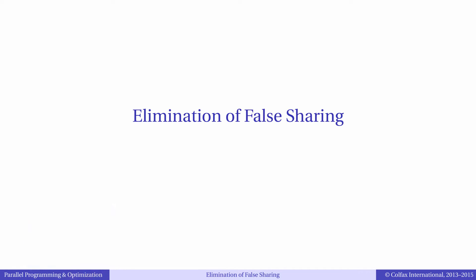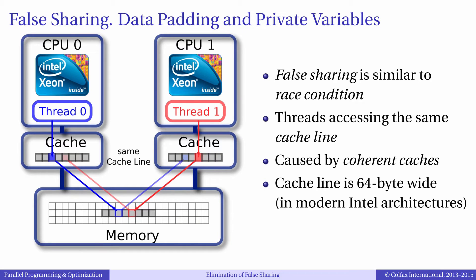False sharing is a situation that occurs when two or more threads access objects stored in the same cache line and one of those accesses is a write operation. When false sharing occurs it may slow down the parallel application. This is related to the protocol with which memory caches operate.